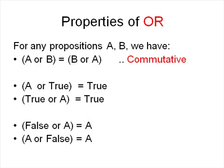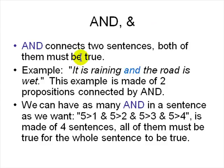And the second operator is the and operator. And connects two sentences. Both of them must be true for the whole sentence to be true. For example it is raining and the road is wet. This is made up of two propositions connected by and. We can join as many and as we want in a sentence. Phi greater than one and phi greater than two and so on. And all of them must be true for the whole sentence to be true.